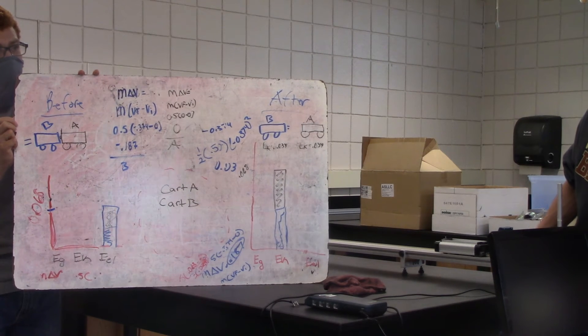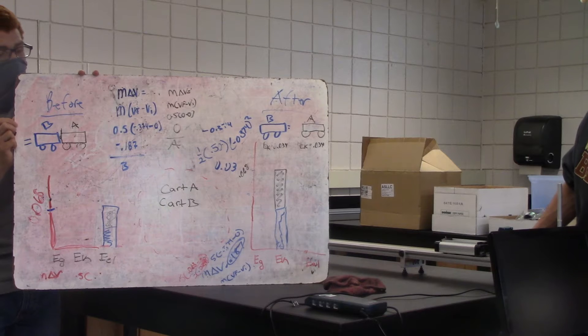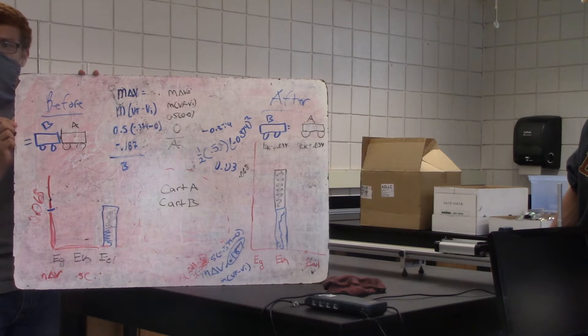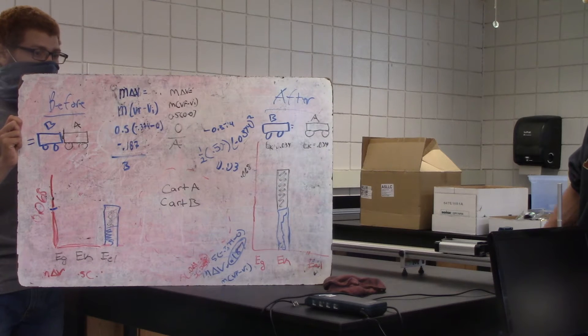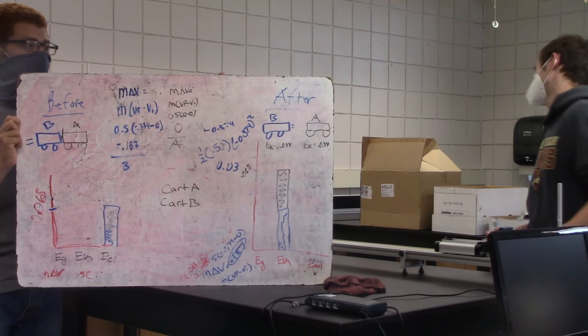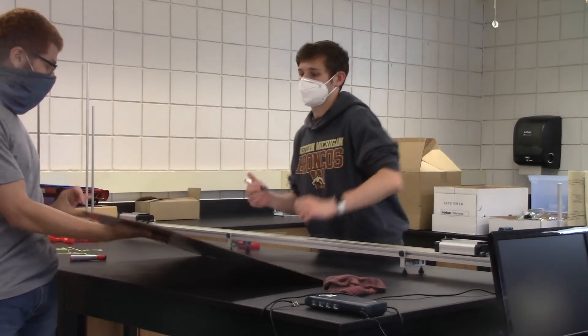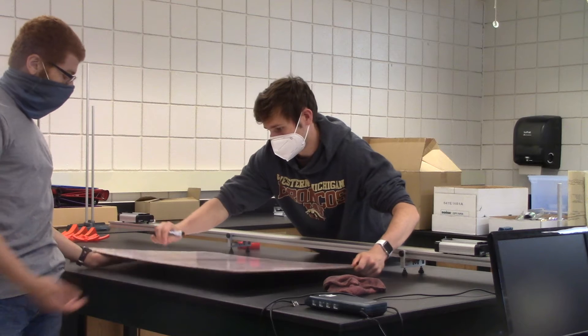What about the M delta V for A? I think, yeah, I did that wrong because I forgot to. So the initial velocity was zero. What's the final velocity for A? It's going to be negative point three, seven, four. Yeah. So why don't you fix that real quick?